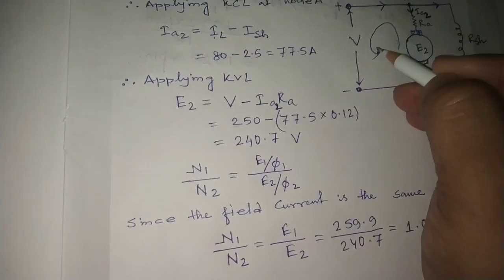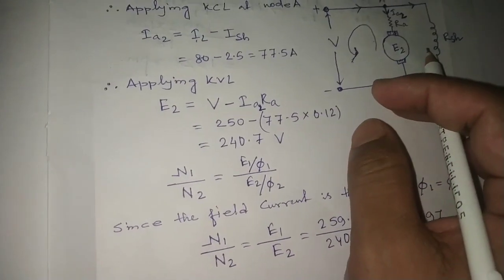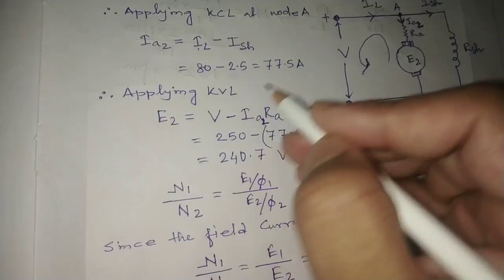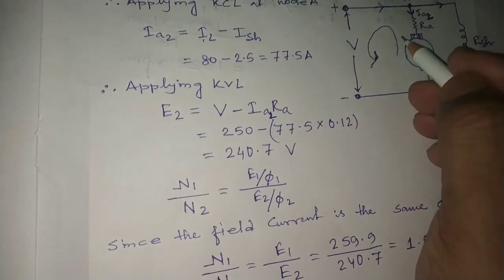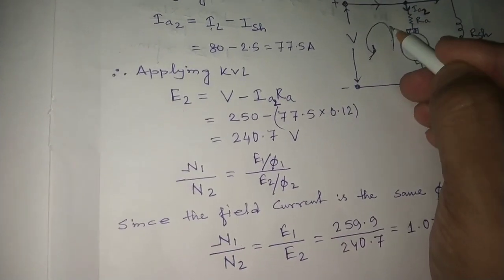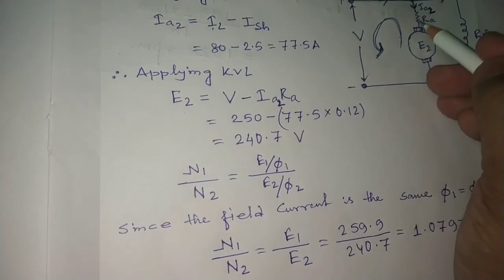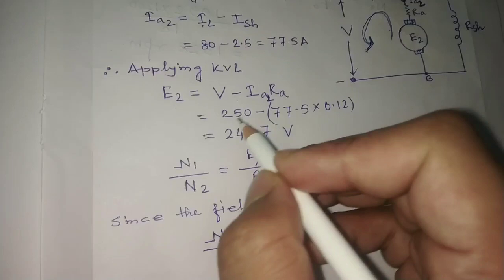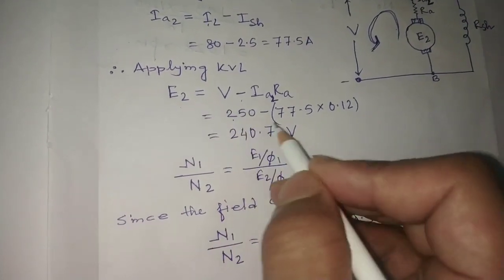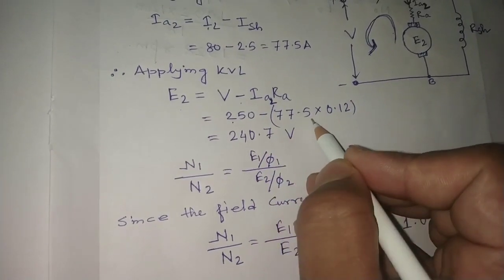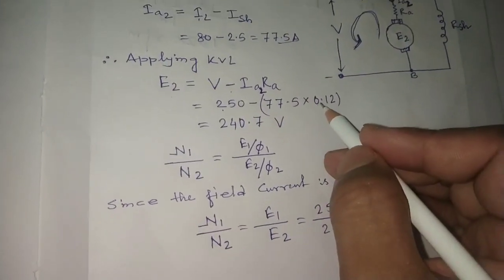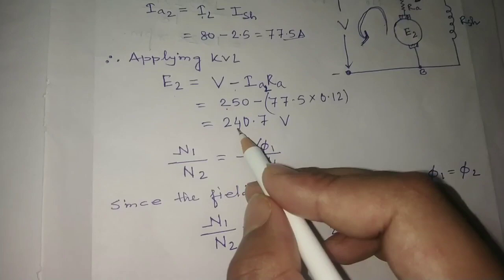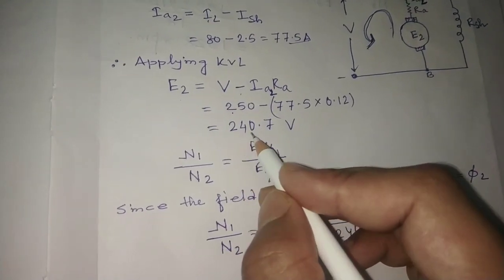Applying KVL for the motor case, let the EMF be E2. The equation gives E2 equals V minus Ia2 multiplied by Ra. The direction is opposite, so we subtract. Substituting: V is 250 volts, Ia2 is 77.5 amperes, and Ra is 0.12 ohm. Therefore E2 equals 240.7 volts.